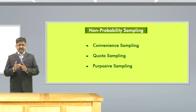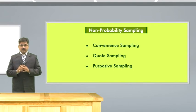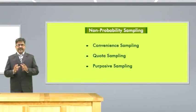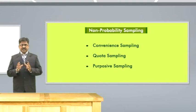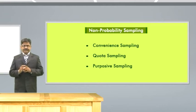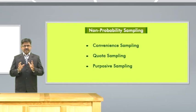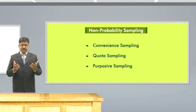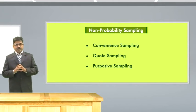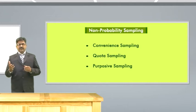Another non-probability sampling is quota sampling. In quota sampling, it is often confused with two other probability sampling methods: stratified sampling and cluster sampling. In quota sampling, you select people non-randomly according to some fixed quota. It can be either proportional or non-proportional. Suppose your population consists of male and female, so you fix that 50 percent of your sample will be male and 50 percent will be female — that means we are fixing the quota. So this is called quota sampling.